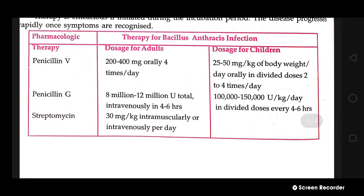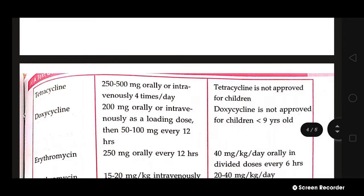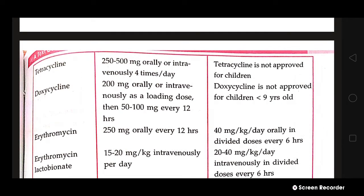Pharmacological treatment includes Penicillin V: 200–400 mg orally four times per day; for children, 20–50 mg per kg of body weight per day in divided doses every 4 to 6 hours. Streptomycin: 30 mg per kg given IM or IV per day; not recommended for children. Tetracycline: 250–500 mg; also not given to children.